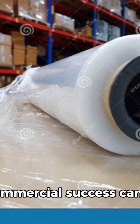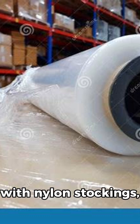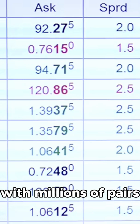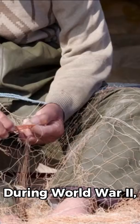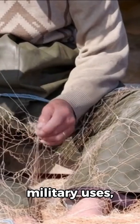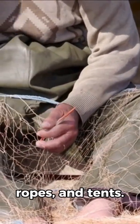Nylon's first major commercial success came with nylon stockings launched in 1940. They were an instant hit, with millions of pairs sold in the first year. During World War II, nylon was diverted to military uses, including parachutes, ropes, and tents.